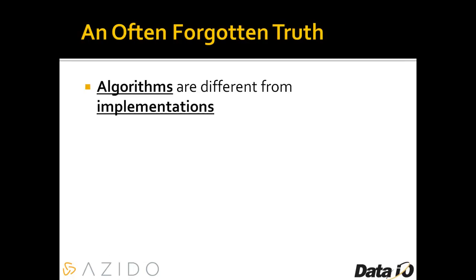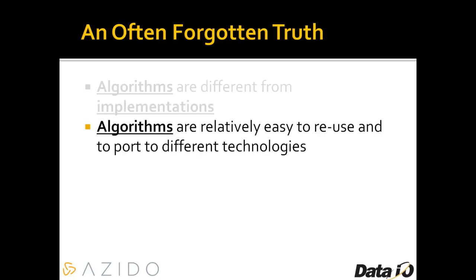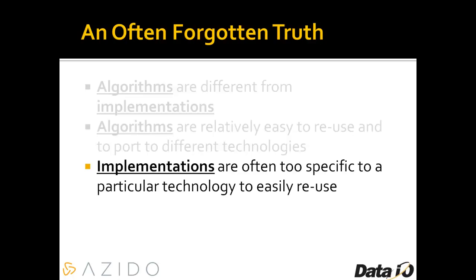One of the fundamental truths is that algorithms are different from implementations. Algorithms are generally universal, and they're relatively easy to reuse and to port to different technologies and different architectures. Implementations, however, are usually too specific to a particular technology or architecture, making them difficult to reuse.